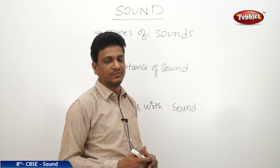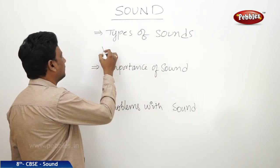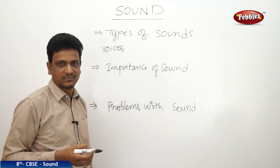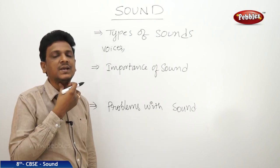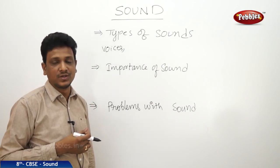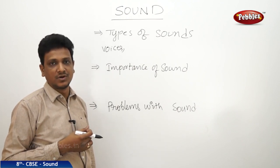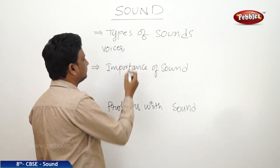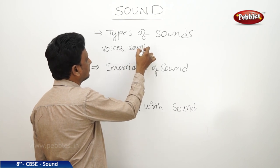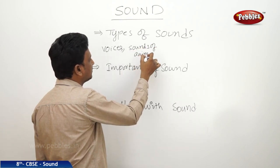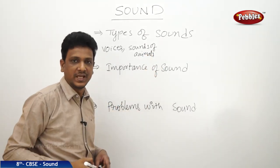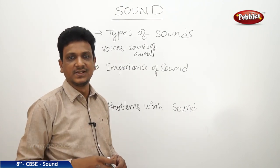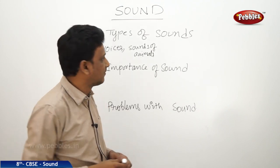Sounds are of different types. First, voices of people — vocal sounds are produced by a pair of vocal cords, and that is what we call speech or language, which people use to communicate in different languages. Second, sounds of animals and birds — these are different. You go to a zoo or a garden and you will find so many sounds of birds chirping and various animal sounds.